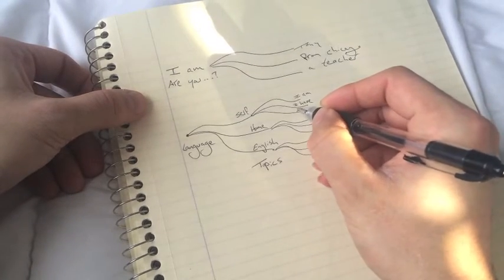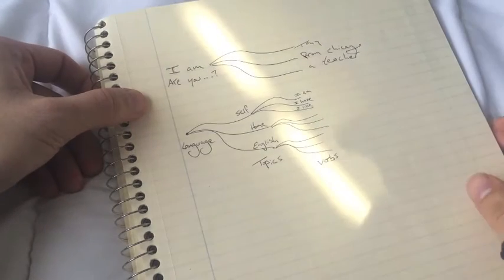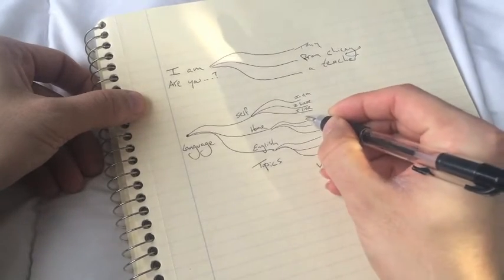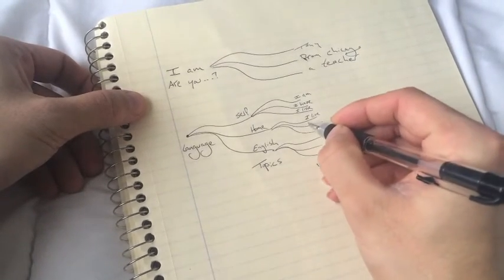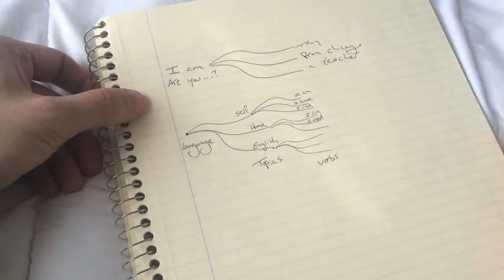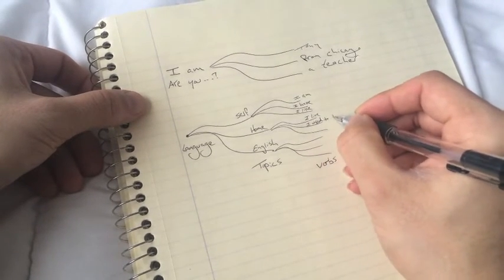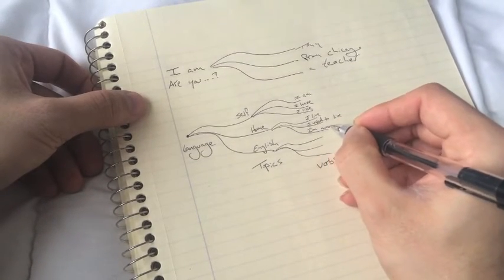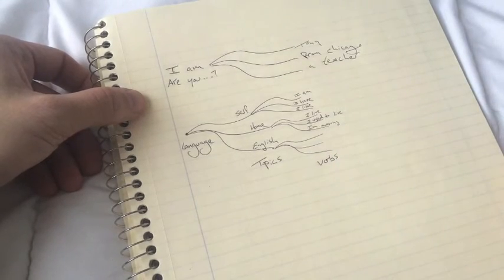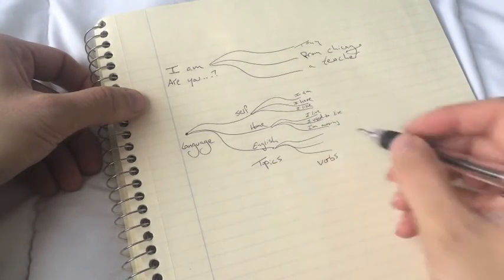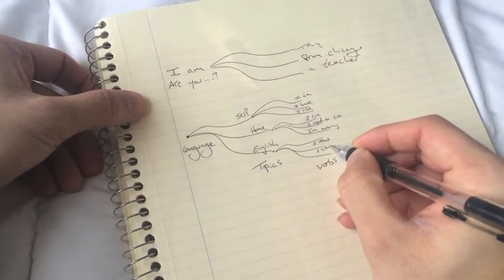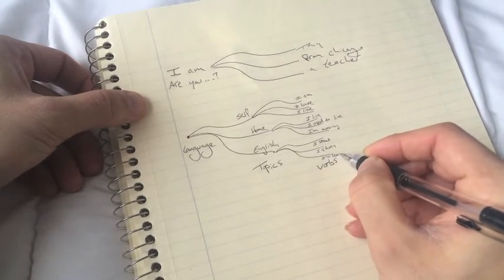Or the verb might be I like, such as I like languages, I like coffee and tea. Home might be I live, or I used to live in the past, or I'm moving, I'm going to move somewhere. Or if the topic is English, it might be I speak, I study, I'm learning, whatever verbs that they might be.